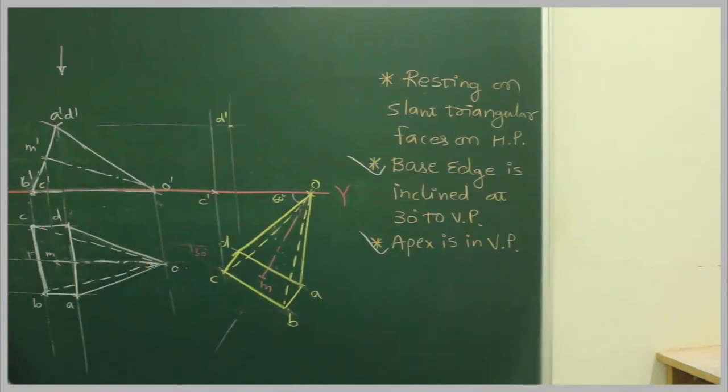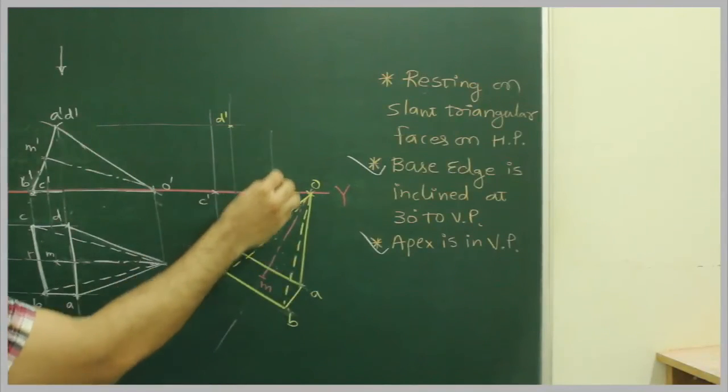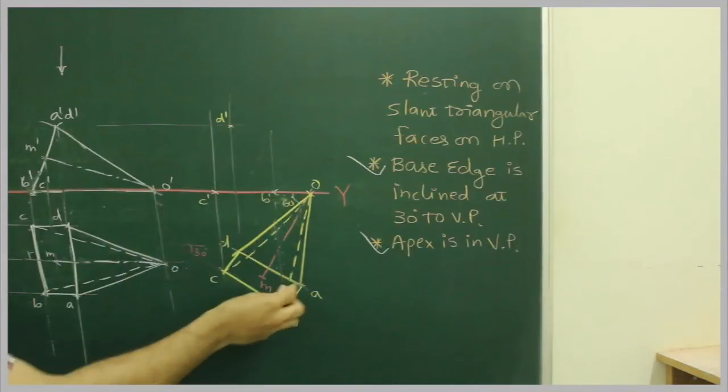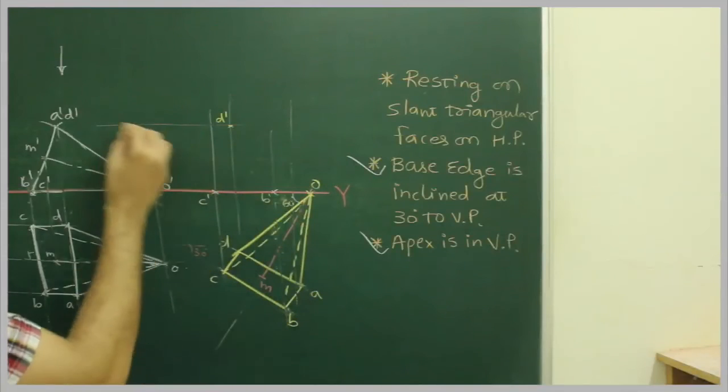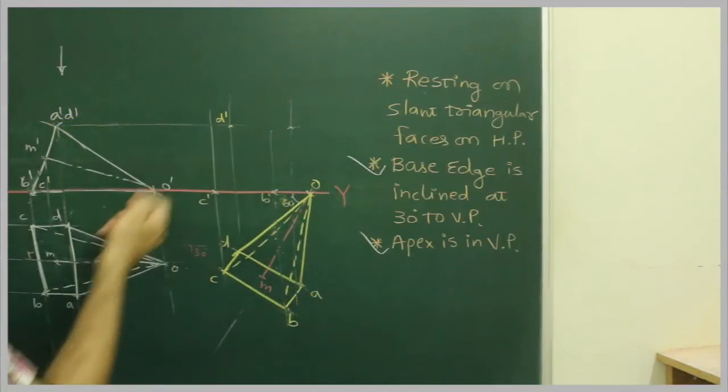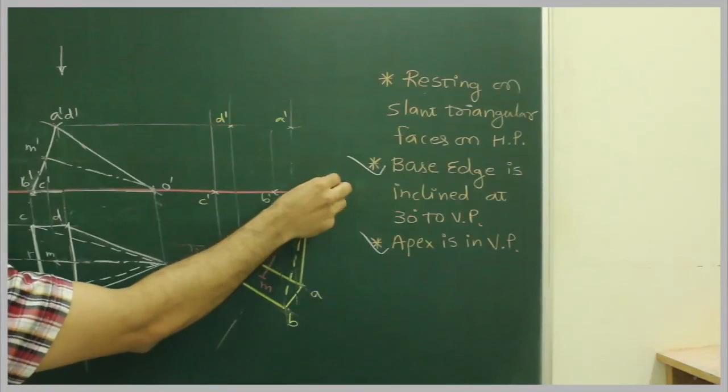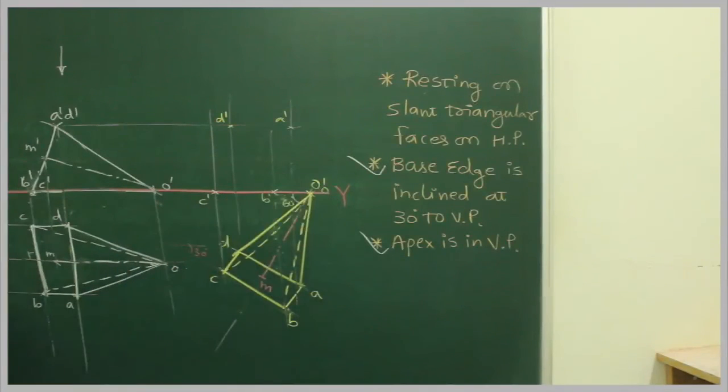D' from here. This is D'. Same way, A from here. A from here. You have A' and this is O'. Right?